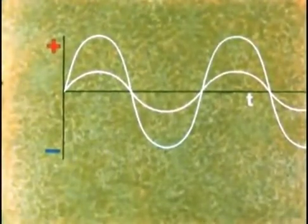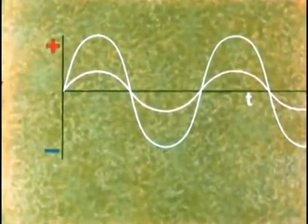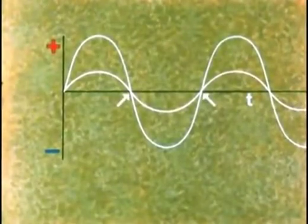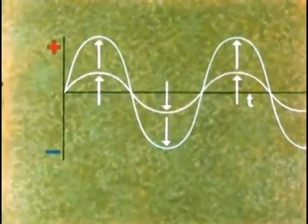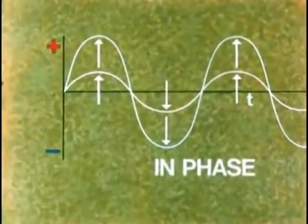Here are two waveforms of the same frequency but with different amplitudes. However, they do pass through zero and come to their peak values at the same time. We say that they are in phase.